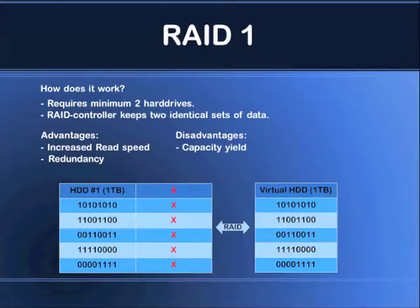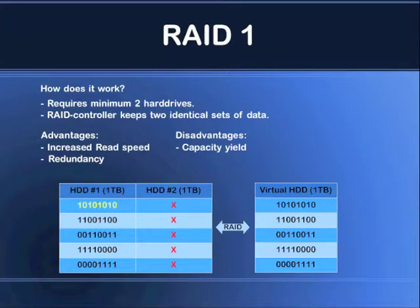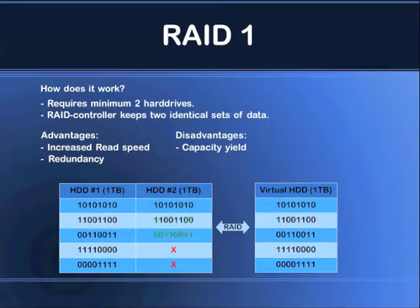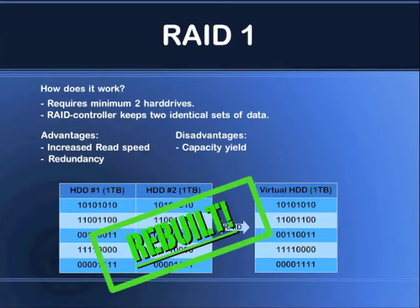And what happens when you put a new drive into the system? Well, either automatically or manually you can rebuild the system. What happens is that the RAID controller will just take the data from disk number one and copy it to disk number two, and it will do that until all the data is safely copied. And the result is that you have rebuilt your disk array and you did not lose a single file.